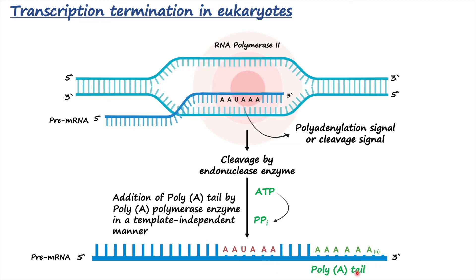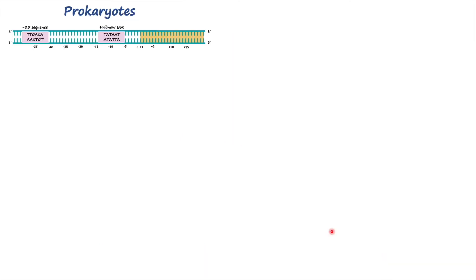Once the poly-A tail is added onto the three-prime end of the pre-mRNA strand, the transcription termination process is completed in eukaryotes. Now I want to quickly talk about some basics that are important when discussing DNA transcription in prokaryotes and eukaryotes.